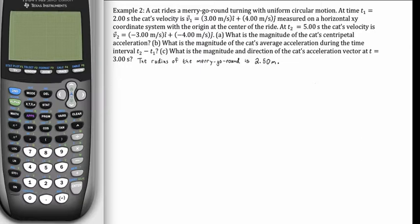For part B, we're asked what is the magnitude of the cat's average acceleration during the time interval. And for part C, we're asked what is the magnitude and direction of the cat's acceleration vector at t equals 3 seconds. There's missing information that was not transcribed correctly. For part A in particular, the radius of the merry-go-round is needed. So let's start with part A. The radius r is 2.50 meters.